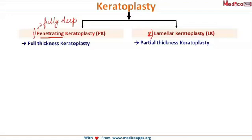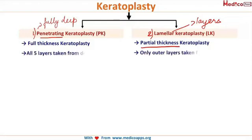The word 'lamellar' means layers — that's the meaning of the word. So different layers, only selected layers of the cornea, or you can put it as partial thickness of the cornea, is transplanted. It's a partial thickness keratoplasty, meaning only the outer layers are removed from the donor and placed onto the recipient's eye.